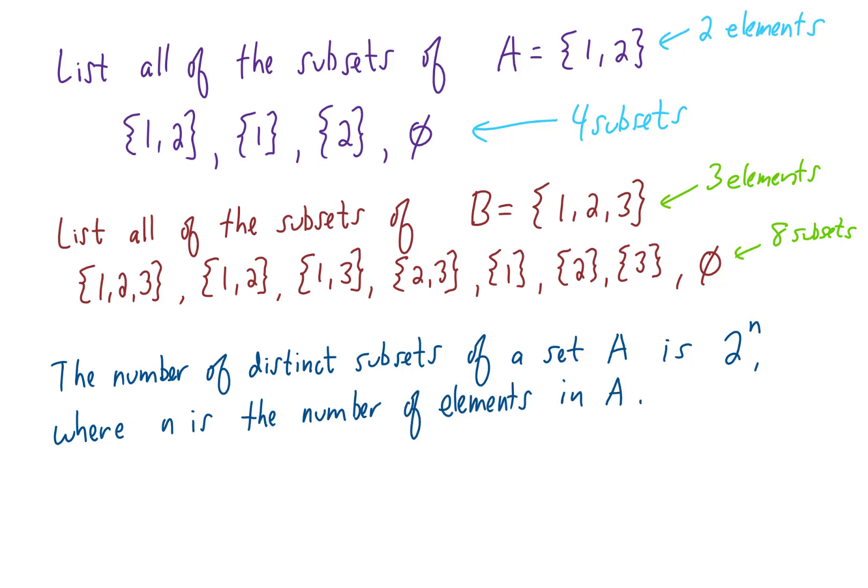I bet you didn't see this coming, but there is a formula for the number of subsets that a set has. There it is. The number of distinct subsets of a set A is 2 to the n, where n is the number of elements in A. So if our set has three elements, as this one does right here, we should expect that set to have 2 to the third power subsets. That's 2 cubed. That does equal 8, and that's what we found in this example up here.